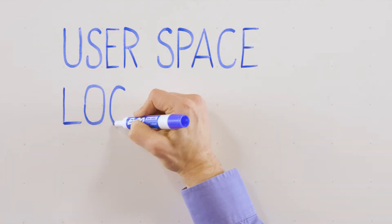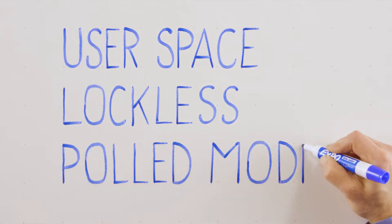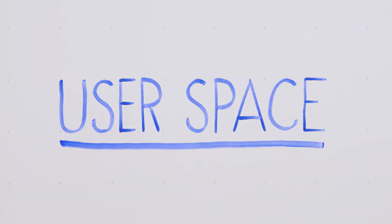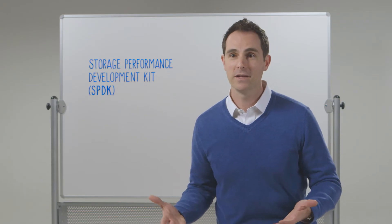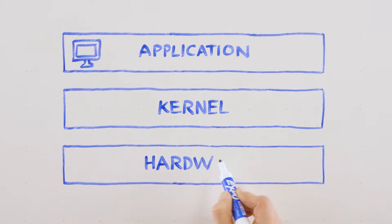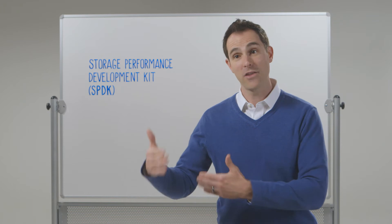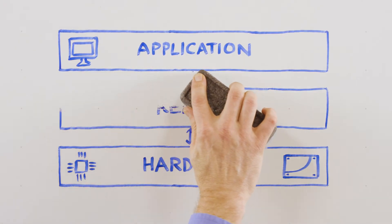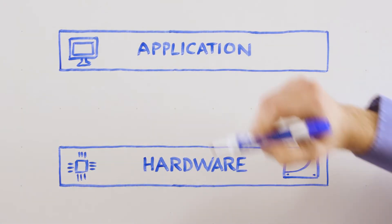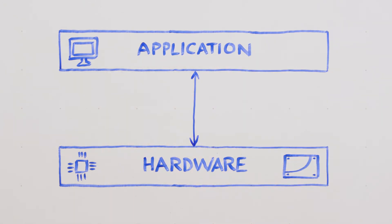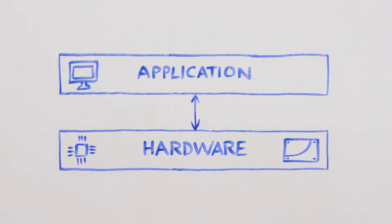SPDK uses three techniques to achieve this scalability and efficiency: user space operation, locklessness, and a poll mode driver model. Historically, applications have talked to hardware through the kernel. The kernel is great, but it is a middleman — it comes between the application and the hardware. As applications and the hardware get faster and faster, that middleman starts becoming burdensome. SPDK bypasses that middleman, connecting the application directly to the hardware, giving you incredibly efficient access directly to the media.